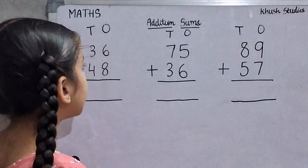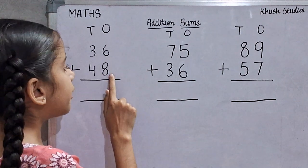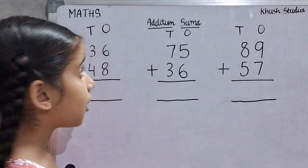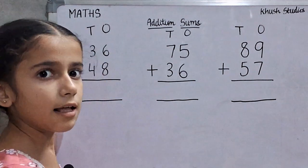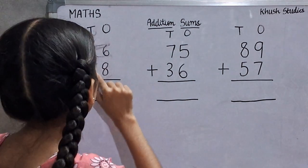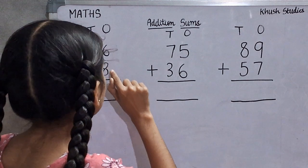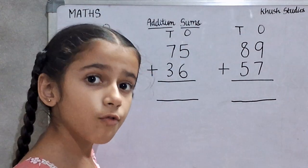We will add 36 plus 48. 3 tens 6 ones is 36. 4 tens 8 ones is 48.